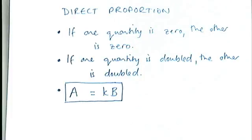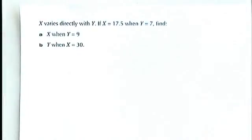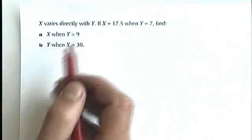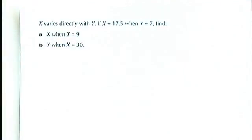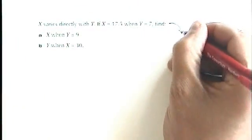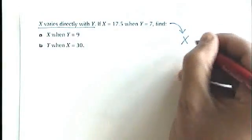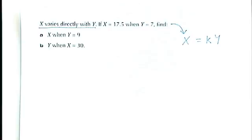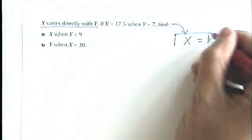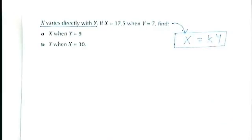So let's have a look at how you actually apply this to some questions. Here is a question. It says x varies directly with y. Varies directly is another way of saying direct proportion. If x equals 17.5 when y equals 7, find a, x when y equals 9, and b, y when x equals 30. Well, this type of question is really, really standard. What you need to do, before you even start part a, is you need to take this information here in the first sentence. First of all, x varies directly with y. That means that you're going to be able to write a formula like that, x equals k multiplied by y. That's the first thing that you should notice. When you see varies directly or is directly proportional to, you need to be thinking about that formula.